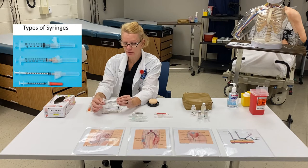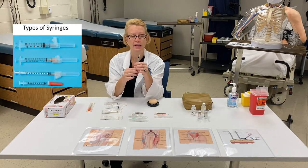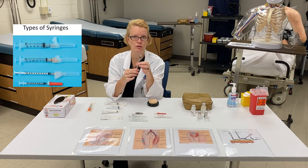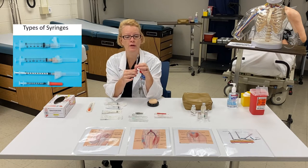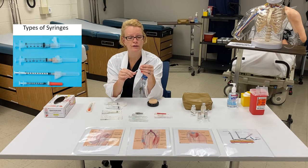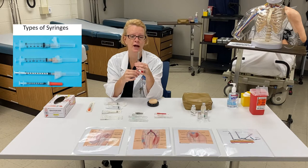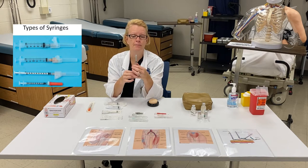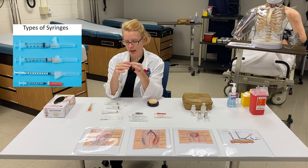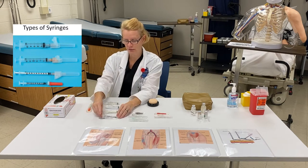The 1 ml syringe actually draws up a volume of anything less than 1 ml. So if you have a very small amount to draw up — let's say a decimal point worth — this syringe, the 1 ml syringe, also known as the tuberculin syringe, is the syringe of choice for anything that might be a smaller volume. It could be 0.1, 0.2, 0.3 — anything that's less than 1 ml, you want to go ahead and get your 1 ml or your tuberculin syringe.